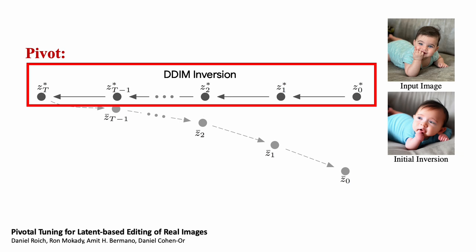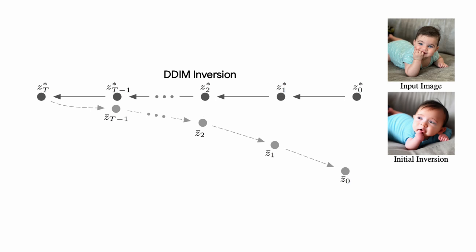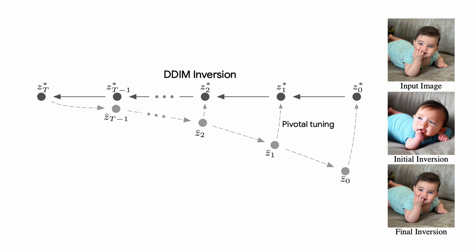Inspired by the pivotal tuning inversion approach, we consider the DDIM inversion trajectory as a pivot and perform our second step optimization around this anchor. More specifically, we aim to bring the diffusion backward trajectory closer to the original image encoding. Ideally, if the trajectory will be identical in both directions, we will get a perfect reconstruction.